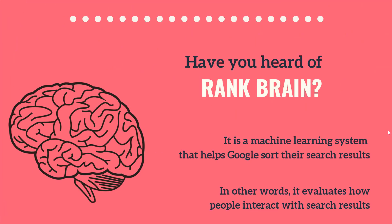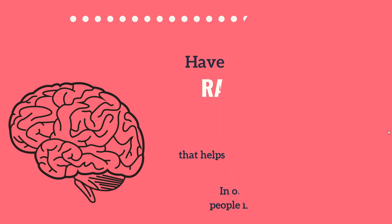Have you ever heard of RankBrain? It's basically a machine learning system that helps Google sort the search results. In other words, it evaluates how people interact with the search results they see on Google. When it comes to evaluating a search result, RankBrain uses two very important factors. One is the dwell time, and the second is the click-through rates — the CTRs.